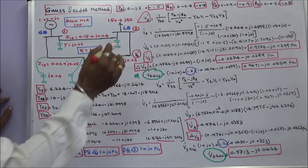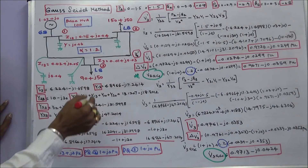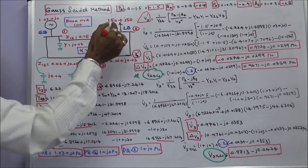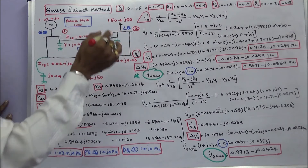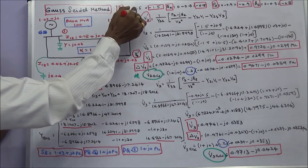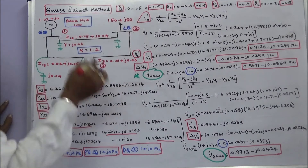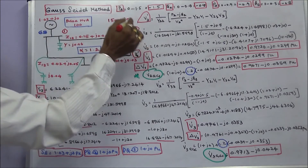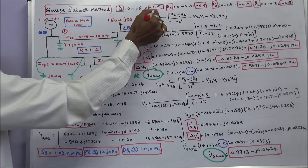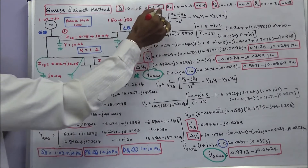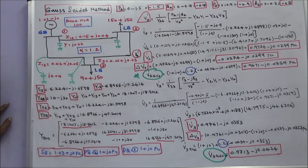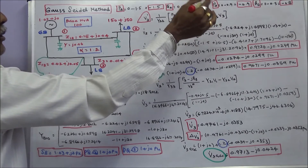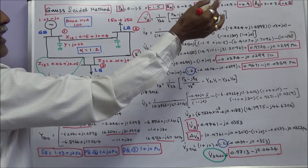Next we calculate P2. Power generation at the load bus is 0, so P2 = 0 minus 1.5 (since the base MVA is 100 and load is 150 MW), giving P2 = minus 1.5. Q2 = minus 0.5. Similarly, P3 = minus 0.9 and Q3 = minus 0.5.